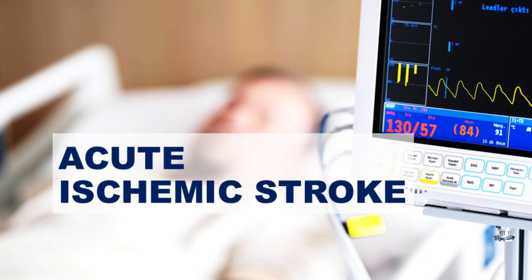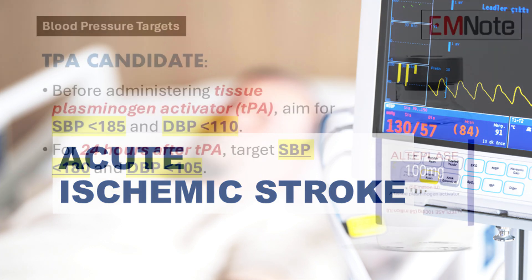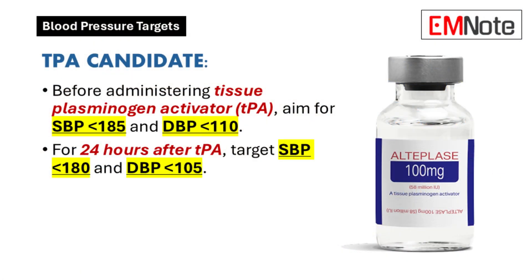In acute ischemic stroke management, protocols are differentiated based on tissue plasminogen activator candidacy. For tissue plasminogen activator candidates, systolic blood pressure must be verified below 185 and diastolic pressure below 110 mmHg prior to administration. Post-administration, systolic pressure must be maintained below 180 and diastolic below 105 mmHg for 24 hours.